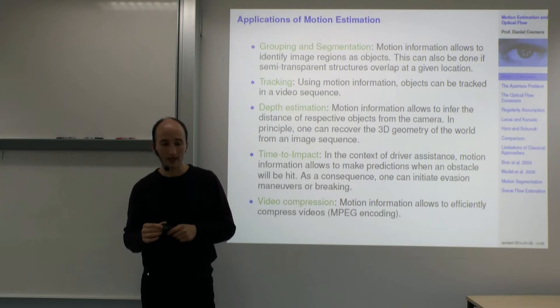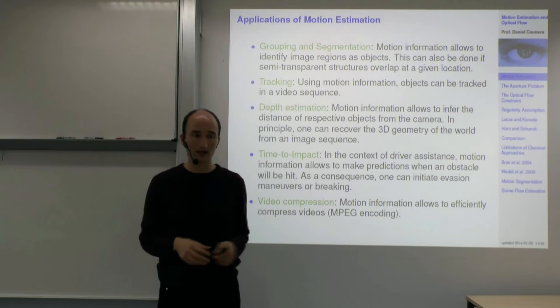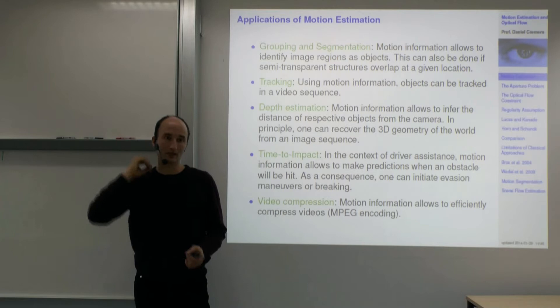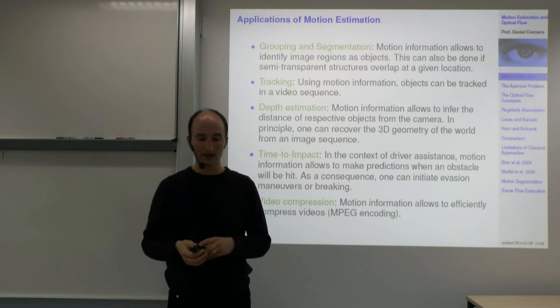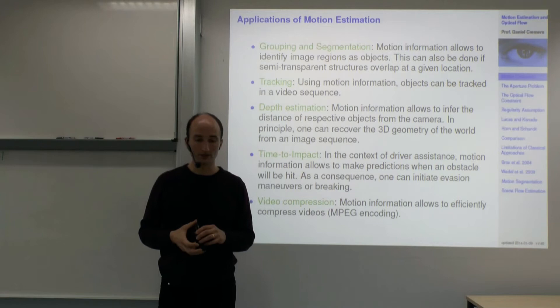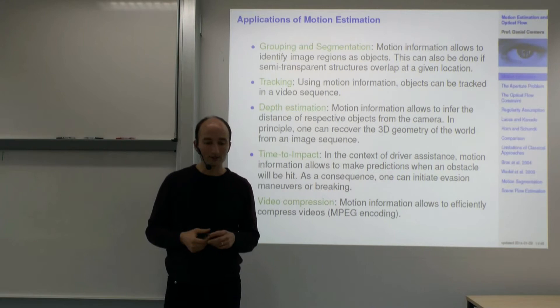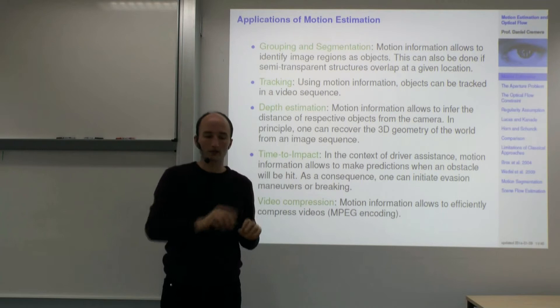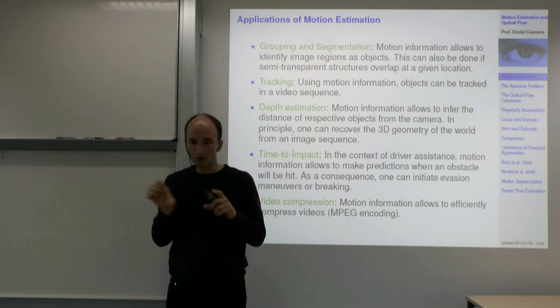We as humans tend to identify camouflaged objects often only once they move. Before they move, you often don't actually see them in their environment, but once they start moving you can pick out where the object is. So motion is really vital for humans and for image analysis to detect and segment objects.